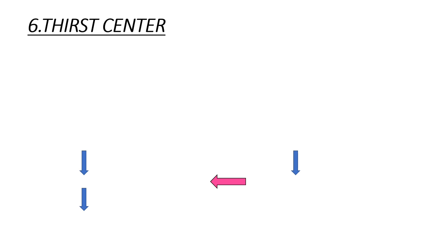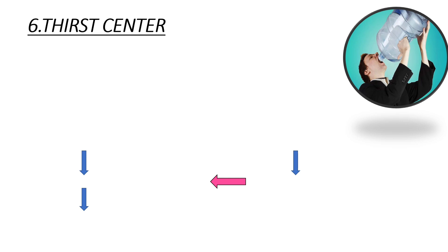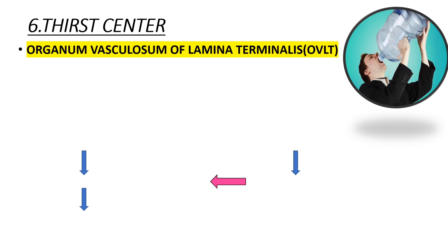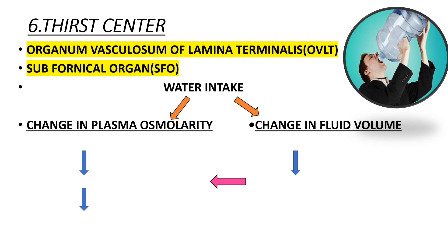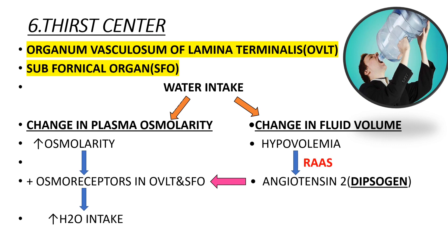Moving on to the thirst center: the organum vasculosum of the lamina terminalis (OVLT) and the subfornical organ (SFO) are the hypothalamic thirst centers. Water intake is maintained by two factors: number one, change in plasma osmolarity; and number two, change in fluid volume.